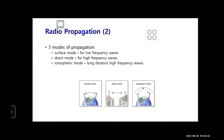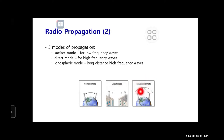There are mainly three modes of propagation. First is surface mode, used only for low frequency waves. Second is direct mode, used for high frequency waves and short distances — this is the most important mode. Third is ionospheric mode, used for long distance, high frequency wave transmission.